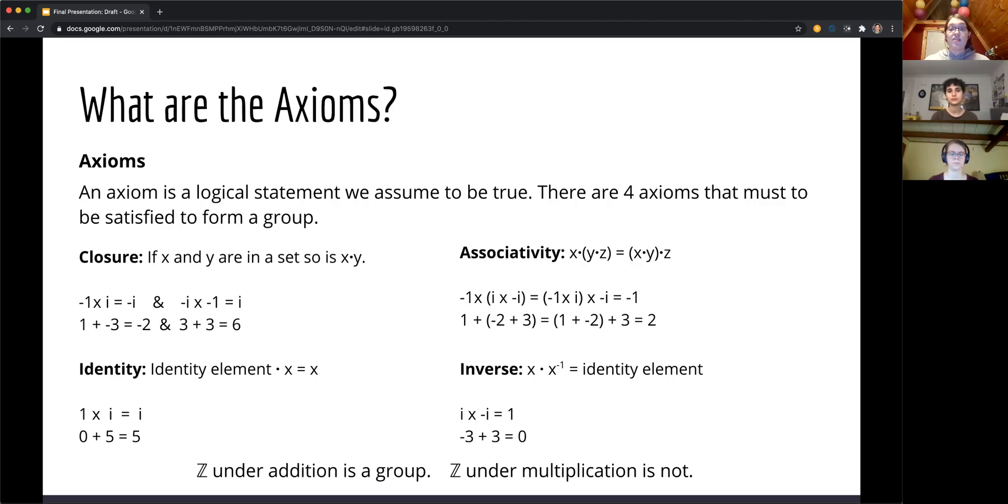And the last axiom is inverse. Inverse is the axiom that states that if there is an element in a set, there must also exist an inverse element that, when combined together, create the identity element. For example, negative 2 and 2 would add together to form 0, the identity element under addition.